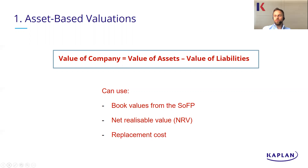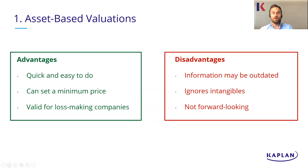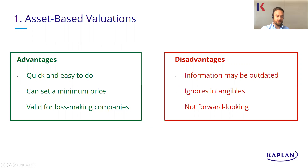It's a straightforward way to value a company. The great thing about this is it's so quick and easy to do — readily available information. If you've got a company's statement of financial position, you can work out the value of that business based on their assets. We can use it to set a minimum price in negotiations for the seller. It also works for loss-making companies or companies looking to potentially go into liquidation. It's also quite good if you're a particularly asset-heavy business, such as a property investor.